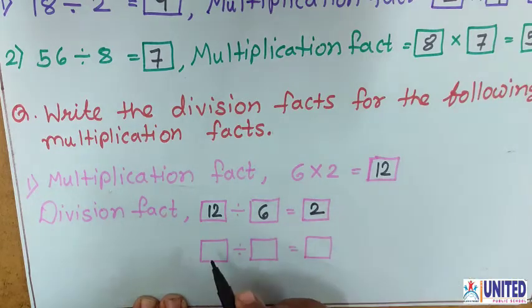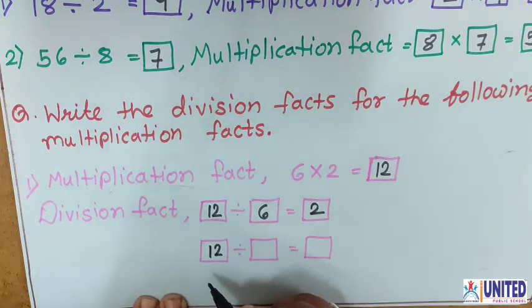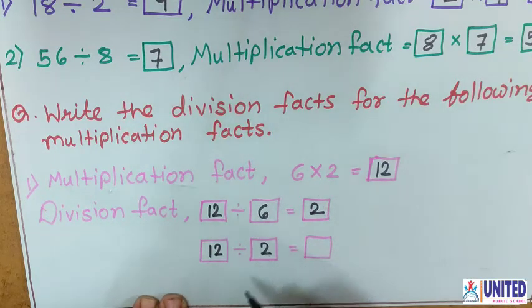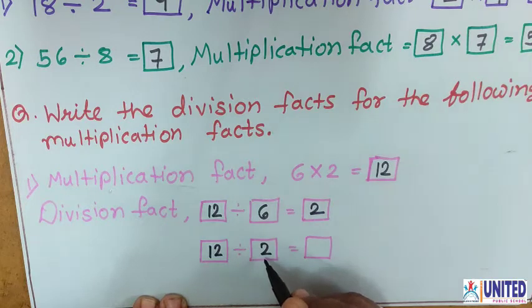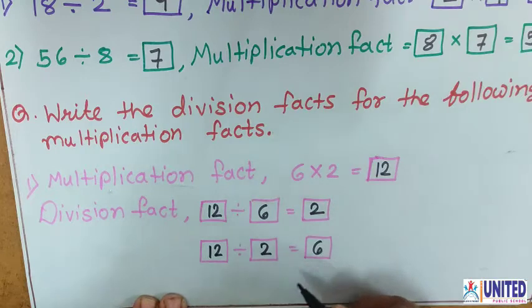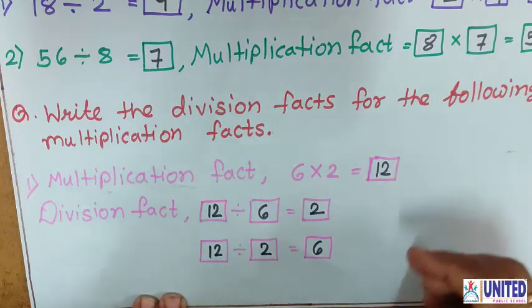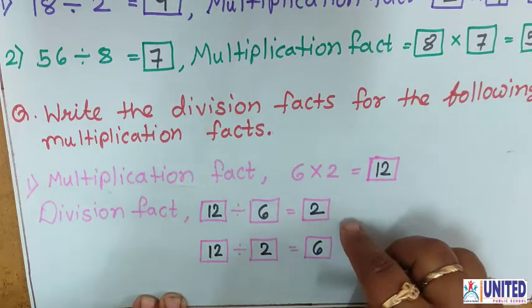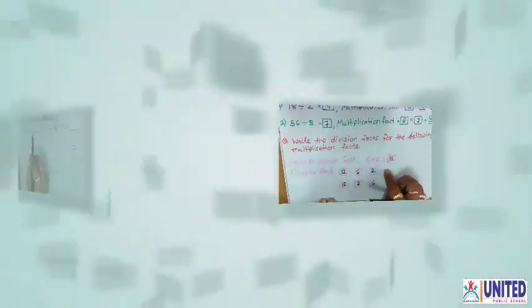Now, second division fact. Again I take 12 as the dividend. Instead of 6, I can take 2 as the divisor. Speak out the 2 times table until 12 comes — 2 sixes are 12. So in this way, one multiplication fact can be written as 2 division facts.